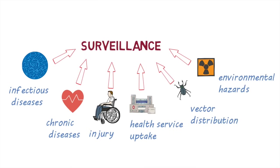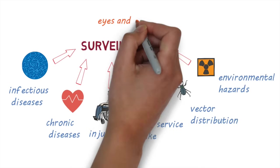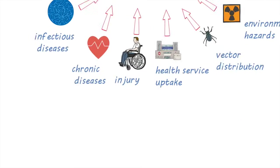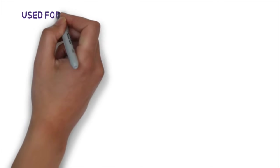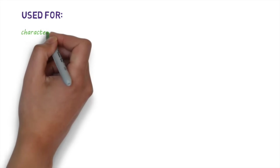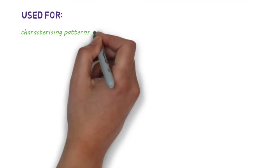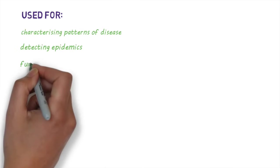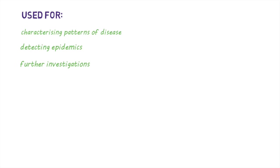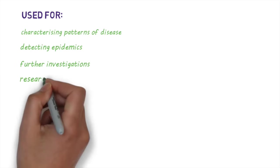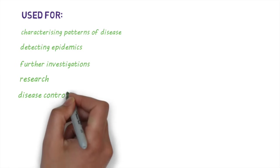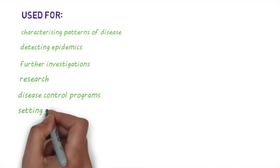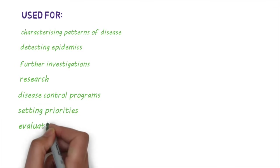Surveillance can be thought of as the eyes and ears of public health. The information gained from surveillance can be used for characterizing the patterns of disease, detecting outbreaks, suggesting hypotheses for further investigation, identifying cases for further research, guiding disease control programs, setting public health priorities, or evaluating health programs.